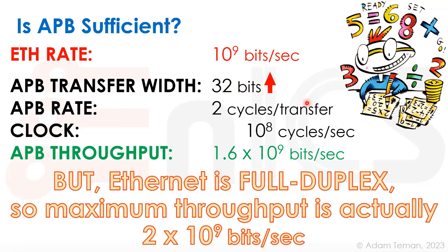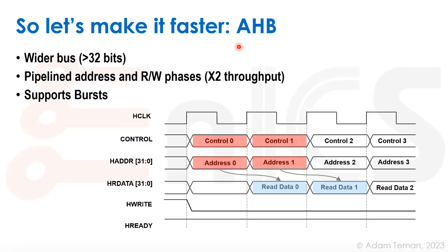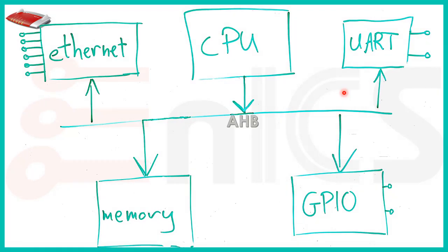To handle Ethernet properly, we can increase the transfer width beyond 32 bits and reduce the APB rate below two cycles per transfer to get full transfer width per cycle. The solution is a higher-performance bus: AHB. We use wider buses — for example, 64-bit — and pipeline the address and access phases. While doing the access phase, we already overlap the next addressing phase, achieving one cycle per transmission. AHB also supports bursts, which further improves performance. So we replaced APB with AHB in the middle of our system, with the Ethernet controller sending data through AHB to the CPU.